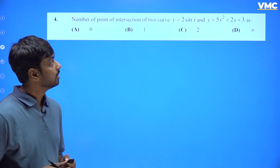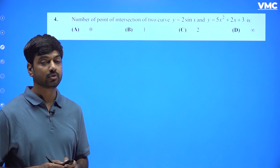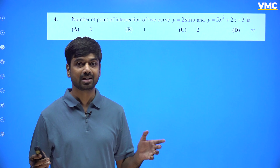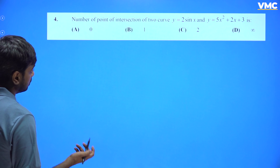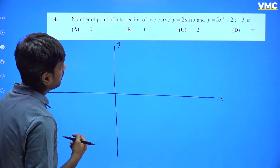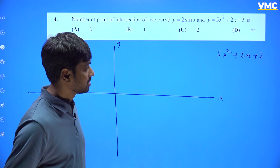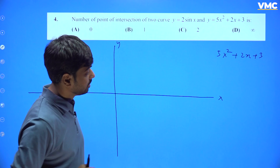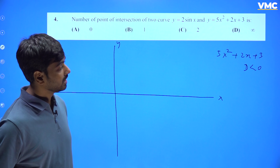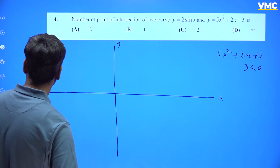Now move to the fourth question: the number of points of intersection of y = 2sin x and y = 5x² + 2x + 3. To answer this, we have to plot both graphs on the same axes and find how many intersections they have. When you look at the quadratic 5x² + 2x + 3 and figure out the discriminant — b² − 4ac = 4 − 60 — the discriminant is negative, so this quadratic has no real roots.